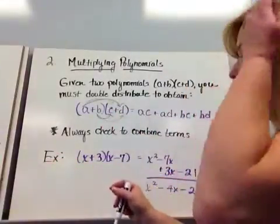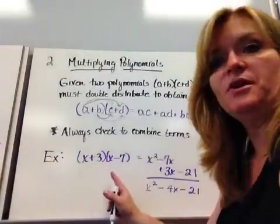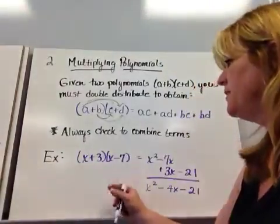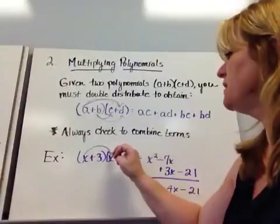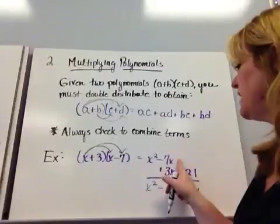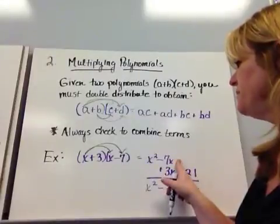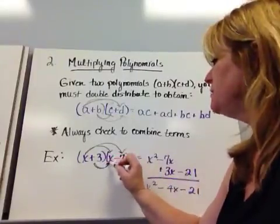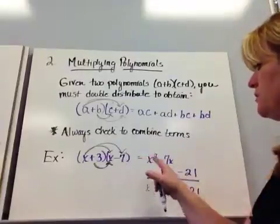An example here with numbers in it would be (x plus 3) times (x minus 7). If I multiply x times x, you'd get x squared. And if I multiply x times negative 7, I get negative 7x. Now I'm going to take the 3 times the x, I get 3x. Now if you notice,